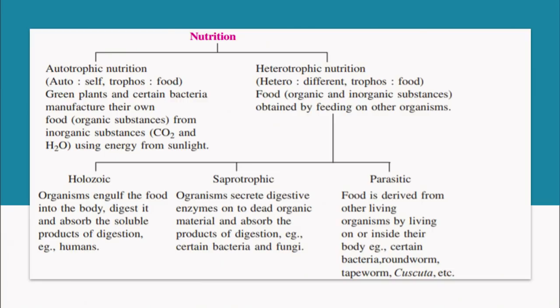Then heterotrophic nutrition — hetero means different and troph means food. The organisms which depend upon the autotrophs for requirement of food, or on other heterotrophs. Food comprises organic and inorganic substances obtained by feeding on other organisms — that is how we can define heterotrophic nutrition.